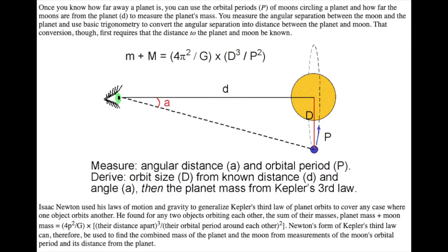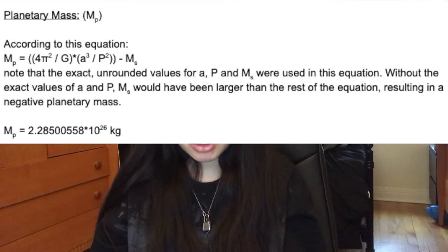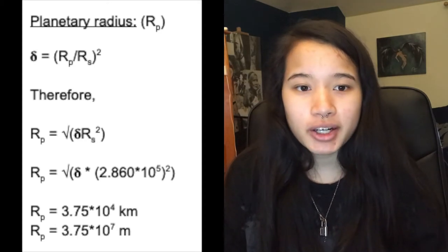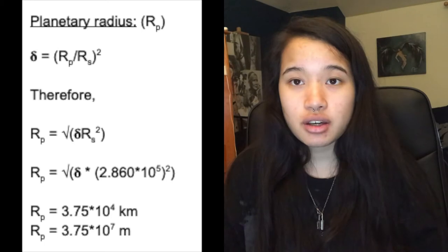The planetary mass is the measure of the mass of the planet. For the equation of the planetary mass, we use a formula that takes into account G, A, P, and the mass of the star. It's important to know that the values of A, P, and stellar mass used in this equation — without exact values — will result in a negative planetary mass. The mass is given in kilograms. The planetary radius is the average distance from the center of the planet to its surface; in other words, it is the measurement of a planet's size. It is an important parameter because it can determine the potential for life and the planetary temperature. To calculate the planetary radius, we use gamma equals the radius of the planet divided by the radius of the star, squared. Rearranging the formula gives us the answer in meters.